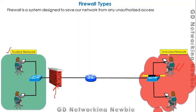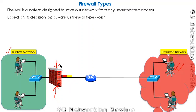If packets are coming from the untrusted network going to the trusted part of the network, the firewall will use some rules or logic. On the basis of that, the firewall will allow the traffic if it is legitimate and legal, and it will drop the packet if the traffic is illegal or not legitimate. Based on what kind of decision logic the firewall uses, we have various types of firewalls.